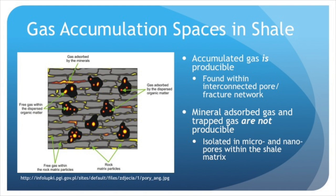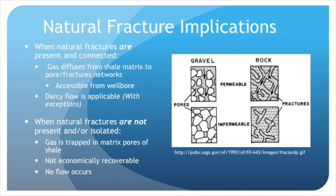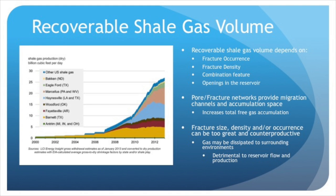Generally, only gas accumulated into interconnected pores and fracture networks is producible, whereas absorptive gas trapped in micro and nanopores within the shale matrix is not producible. When fractures are present, gas diffuses from micropores in the shale matrix to the large pores and fractures following Darcy's law. However, the Darcy equation cannot be used for fine-grained shale strata because of nanopores. In the case of nanopores, both non-continuum effects and dominant surface interactive forces become important, reserving the use of Darcy flow. Absorptive gas on the pore surface in the matrix may also be desorbed under certain pressures. Without natural fractures, gas is trapped in matrix pores of shales and is not economically recoverable. Economically recoverable shale gas volume ultimately depends on fracture occurrence, density, combination feature, and openings in the reservoir.